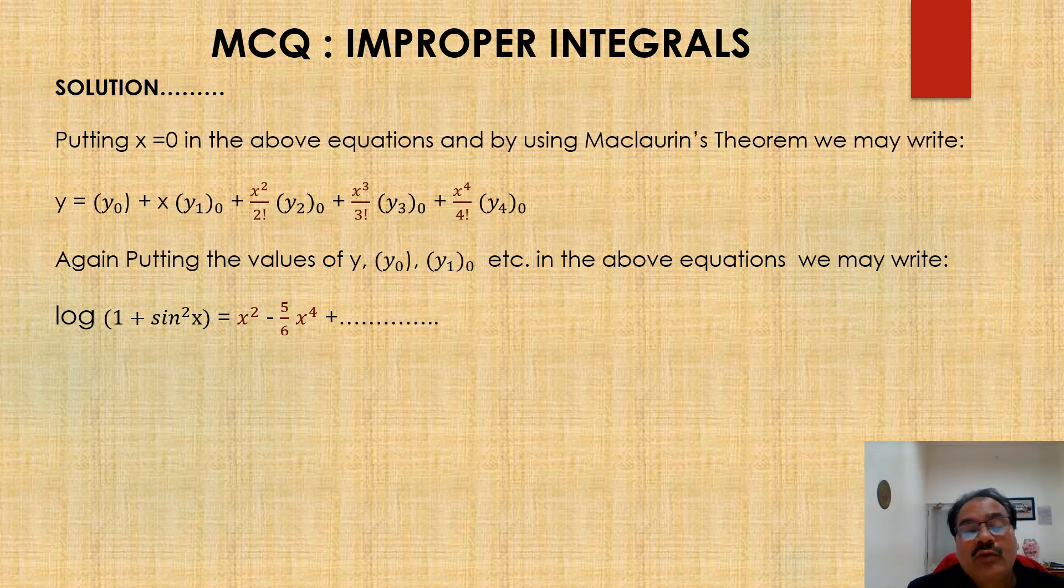Now putting x is equal to 0 because now we got the x power 4 term. And it is required for now putting x is equal to 0 in the above expression. And by using Maclaurin's theorem, we may rewrite the expression as y is equal to y0 plus x y1 not plus x square by factorial 2 y2 not plus x cubed by factorial 3 y3 not plus x power 4 by factorial 4 y4 not and so on.